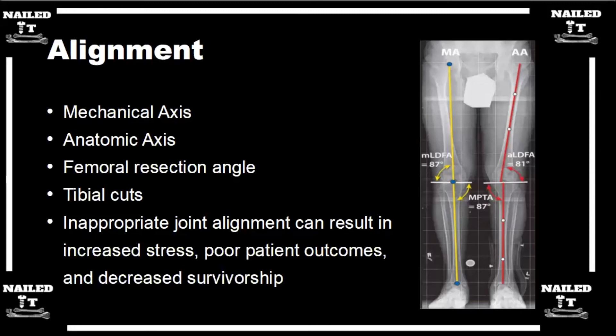That was a great explanation. Just to summarize: we're trying to restore the mechanical axis of the knee. Intraoperatively, we use an intramedullary guide, which goes right down the anatomical axis of the femur. Using that, you adjust your jig and make a cut in about five degrees of valgus, which helps restore the mechanical axis — that's for the femur side. For the tibia side, the mechanical axis and anatomical axis are in line right down the shaft, so you make a cut at 90 degrees.